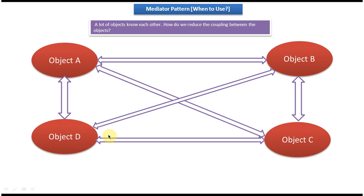So the coupling between the objects is more — it is tight coupling. A lot of objects know each other. Currently only four objects are there, but suppose there are 10,000 objects that all want to communicate with each other. Then writing code and maintaining the codebase would be very difficult.